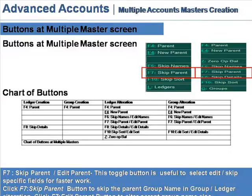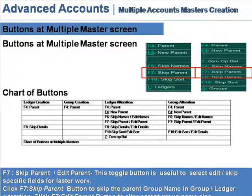Skip Parent / Edit Parent. This toggle button is useful to select edit or skip specific fields for faster work. Click Skip Parent to skip the group name in group or ledger alteration. Click the F7 Edit Parent button to alter the parent group name as well.